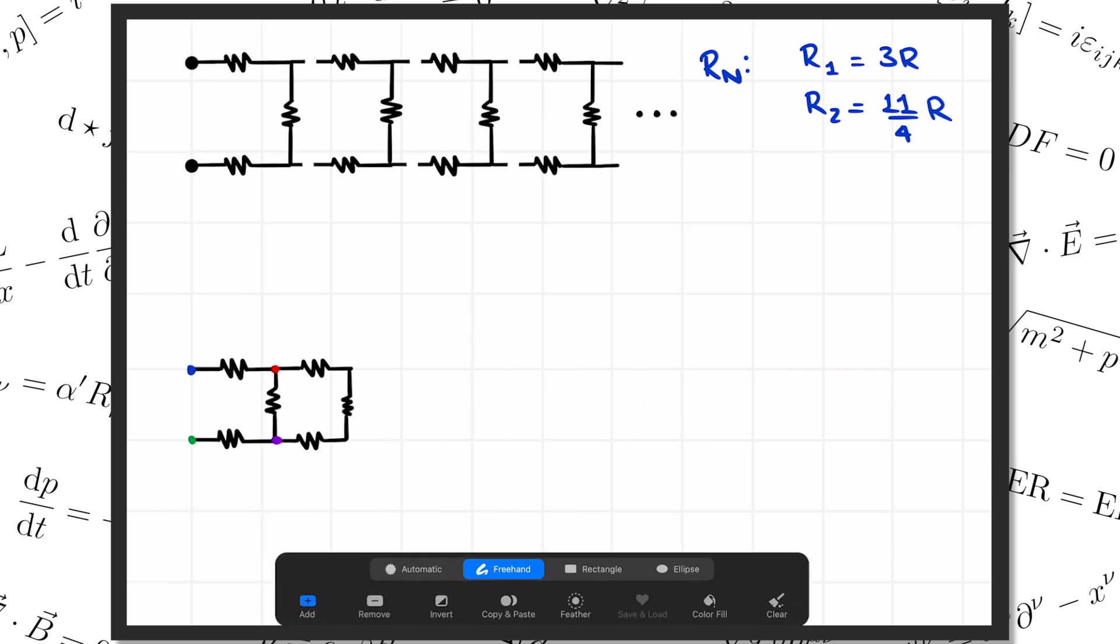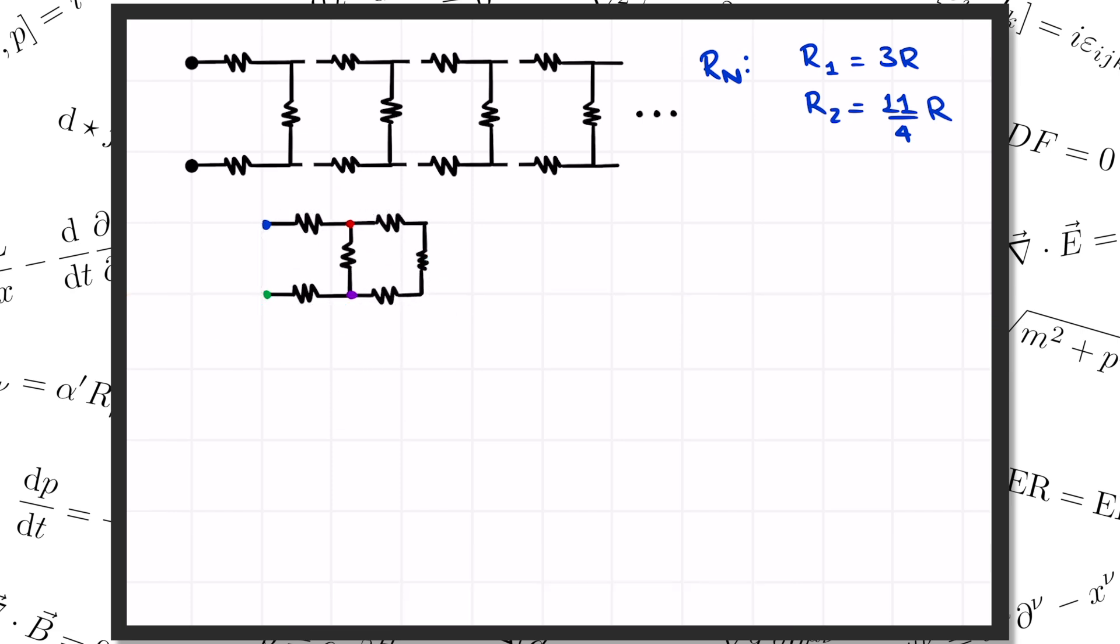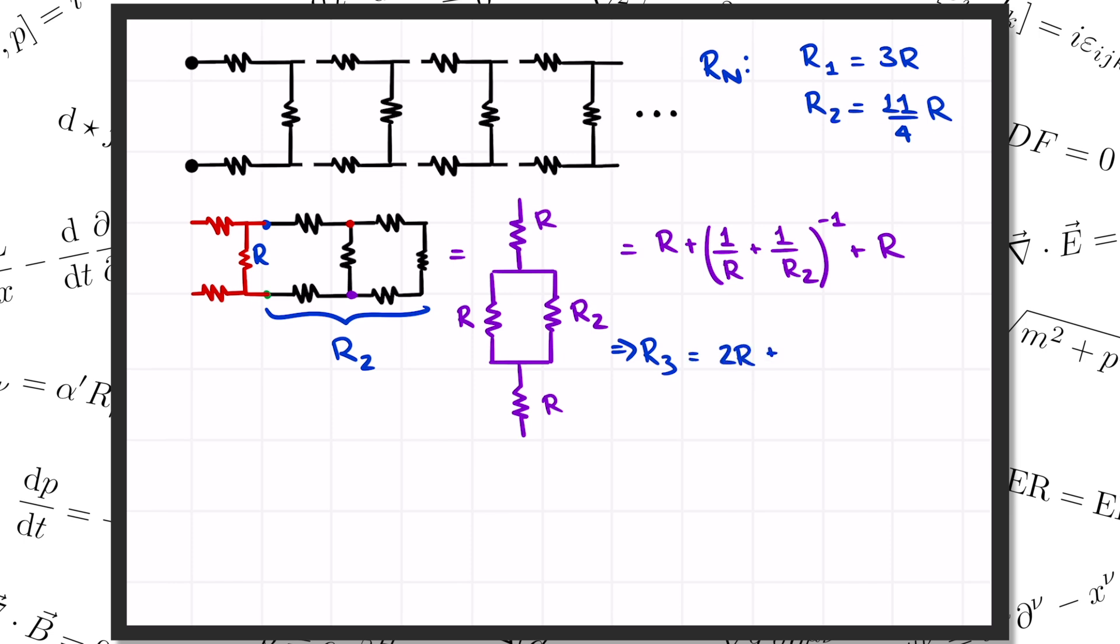What if we go to 3 blocks? Instead of trying to compute that resistance from scratch, let's think about understanding it by adding this third block onto the left of our previous 2-block circuit. It puts that 2-block circuit in parallel with a single resistor R, and then we add on two more resistors in series with that. That means that we can use what we've already learned to write the resistance of the three-block circuit as R from that first resistor, plus the parallel combination of R and R2, the two-block resistance we already calculated, plus one more R. So the resistance of the three-block circuit R sub 3 is 2R plus 1 over R plus 1 over R2 inverse. And if you plug in the numbers here, you'll get R3 equals 41 over 15 times R.